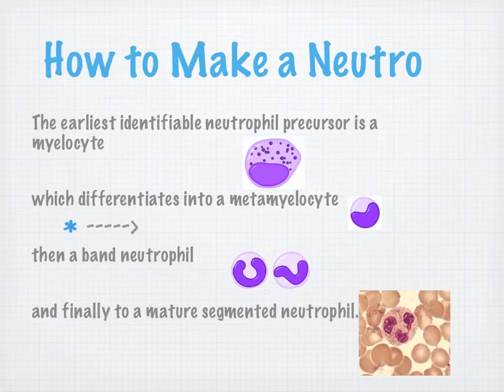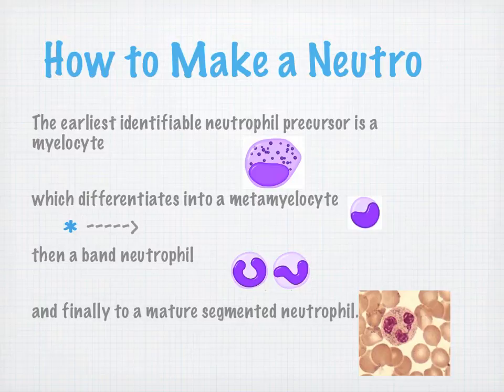How do we make a neutrophil? The earliest identifiable neutrophil precursor is our myelocyte, which differentiates into the metamyelocyte. Then it goes on to become a band cell before finally maturing into a segmented neutrophil. These four different ways of considering this should cover all bases for individual learners.